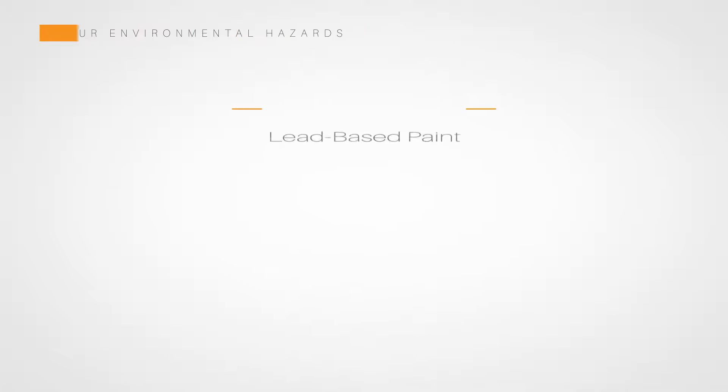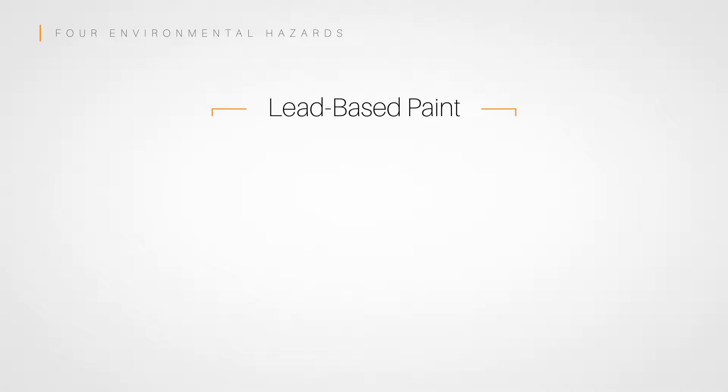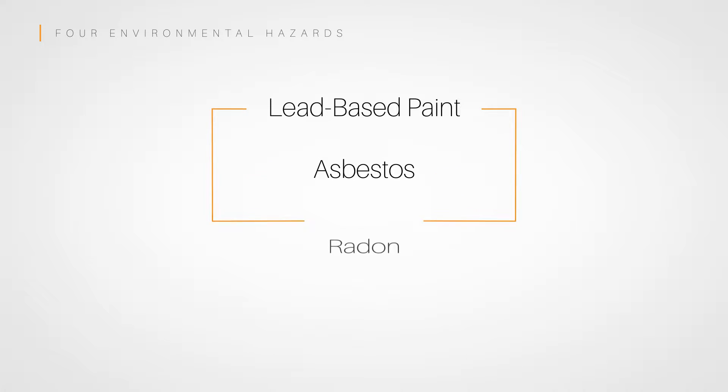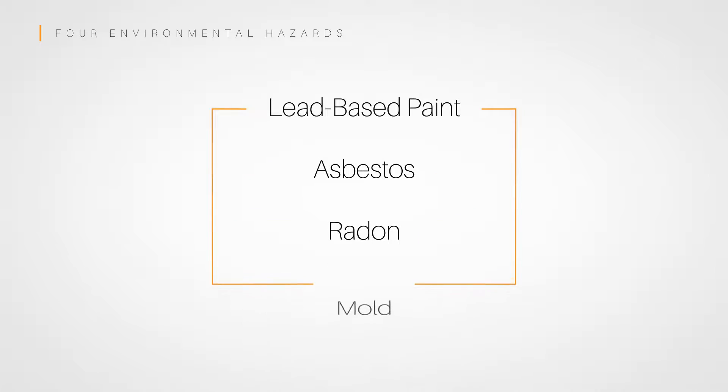Let's take a few minutes to discuss four common environmental hazards real estate agents may have to deal with. They are lead-based paints, asbestos, radon, and mold.